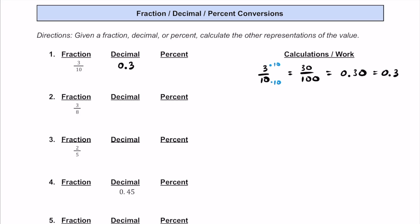Now, what if you want to get this to be a percent? Go ahead and multiply that by 100. We're going to add a 0 there, and that is going to be 30%.